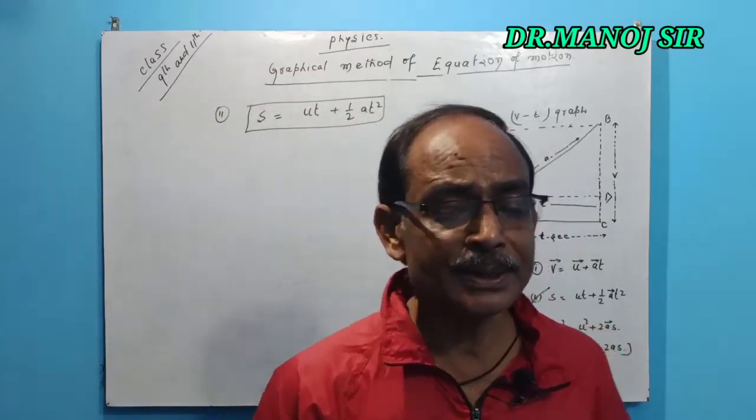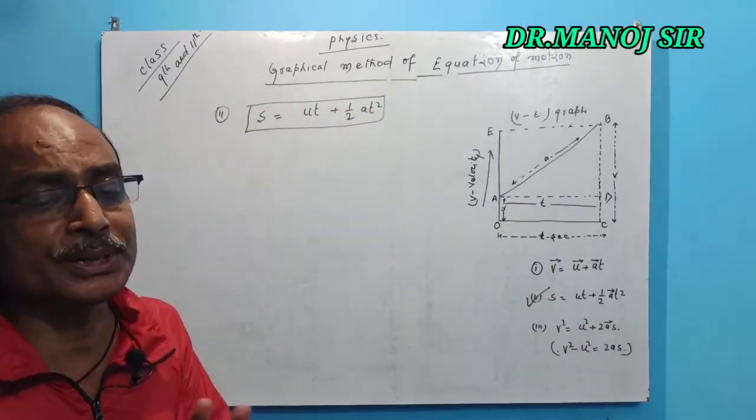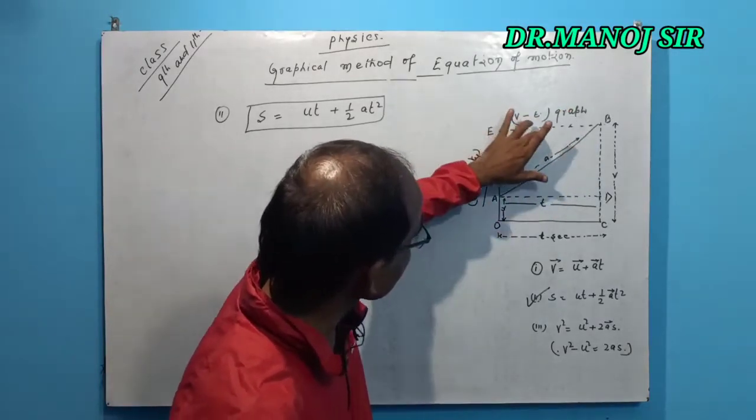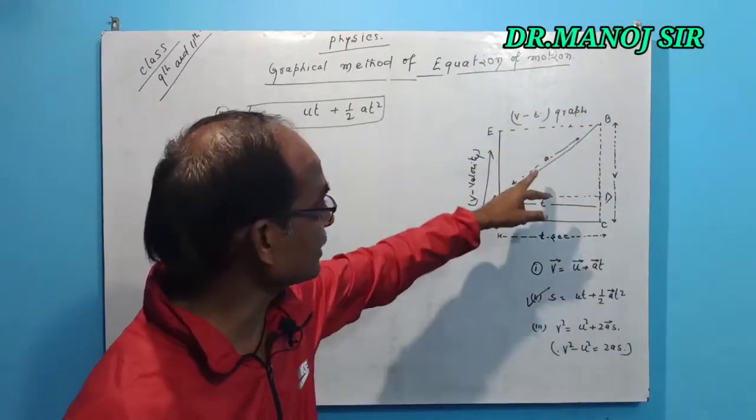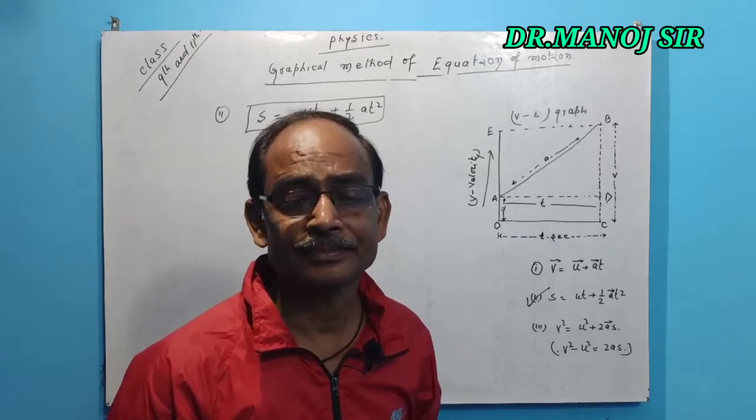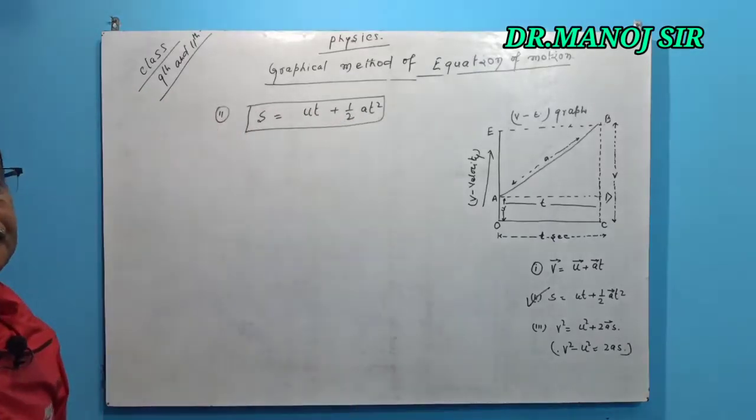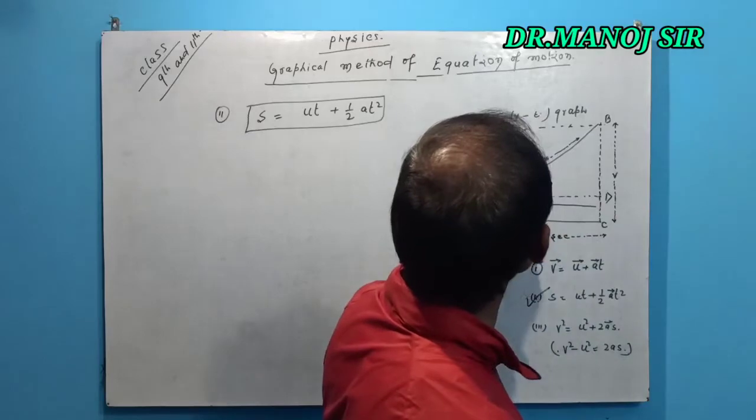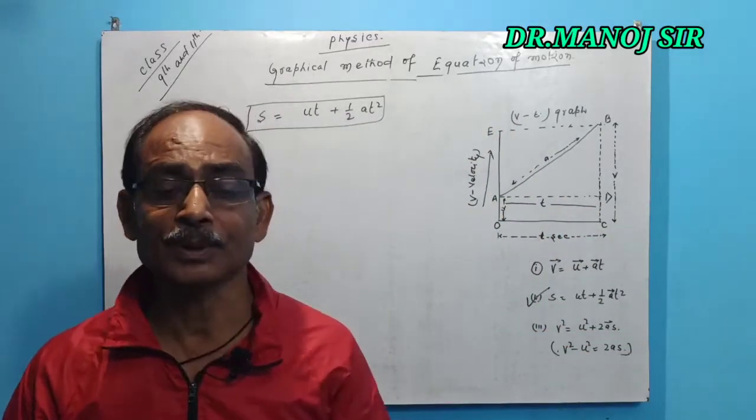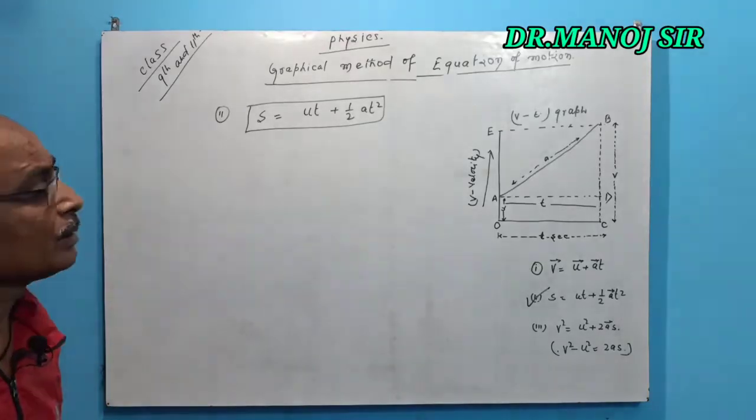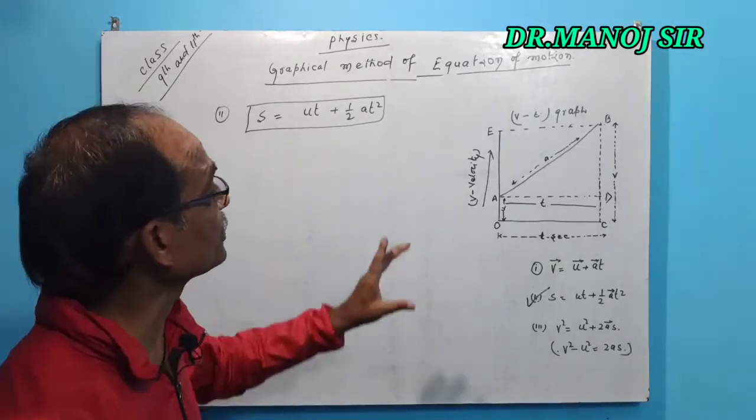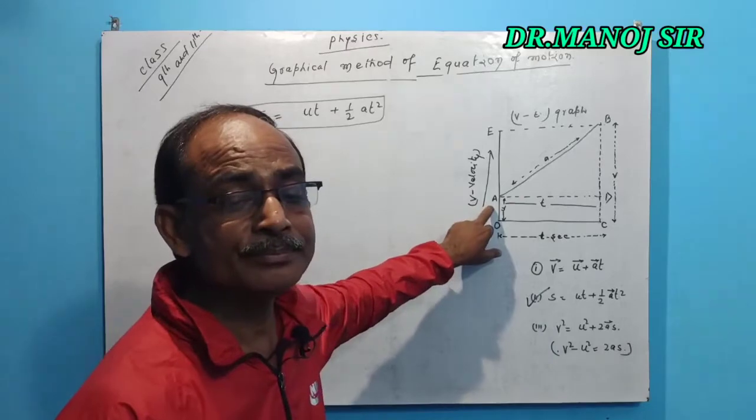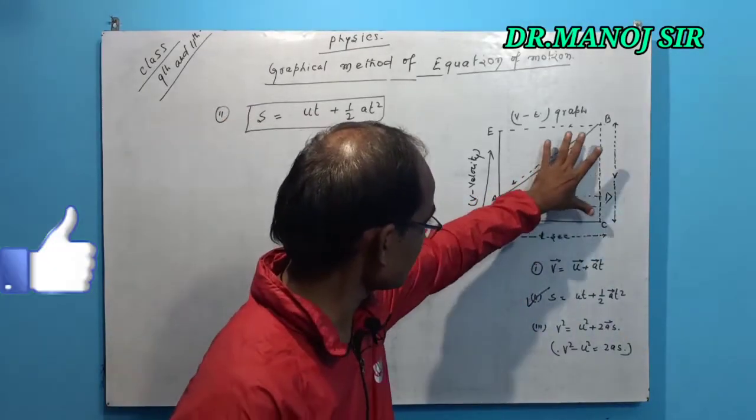Therefore, the area of space between the velocity time graph A B that indicates the acceleration and the time axis O C, O C that is equal to A D equal to t, which is equal to the area of the trapezium O A B C. These are the trapezium.